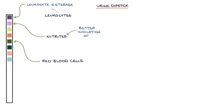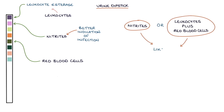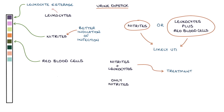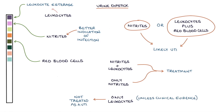Nitrites are a better indication of infection than leukocytes. The NICE clinical knowledge summaries from 2020 suggest that the presence of nitrites, or leukocytes plus red blood cells, indicate that the patient is likely to have a UTI. If both nitrites and leukocytes are present, the patient requires treatment for a UTI. If only nitrites are present, it's worth treating as a UTI. If only leukocytes are present, the patient should not be treated as a UTI, unless there's clinical evidence that they have one.